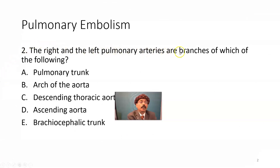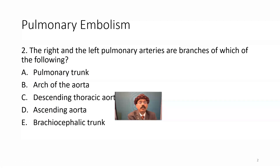The right and left pulmonary arteries are branches of which of the following? They are coming out of the pulmonary trunk — that is the answer. The pulmonary trunk has two divisions: the left pulmonary artery, which is for the left lung, and the right pulmonary artery, which is for the right lung.